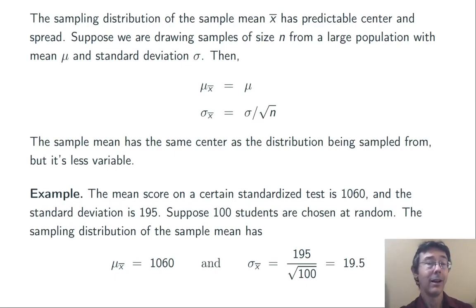Do it again, again, again, and again, and again, and again. On average, that sample mean is going to be 1060. The spread of that sample mean, the standard deviation, is going to be 19.5. It's going to be substantially less than the standard deviation of individuals from within that population.